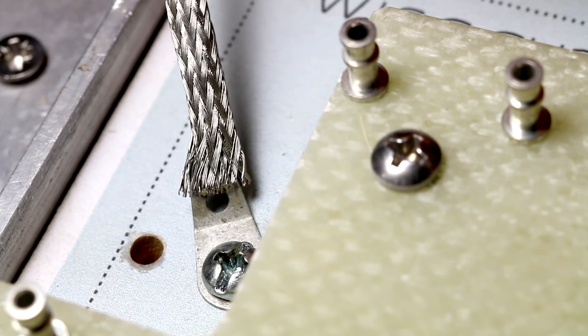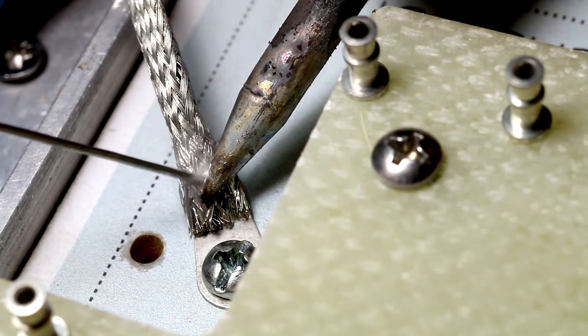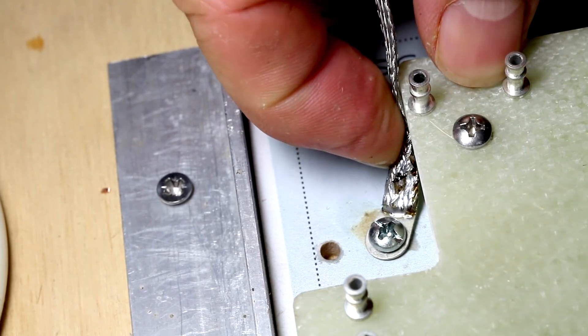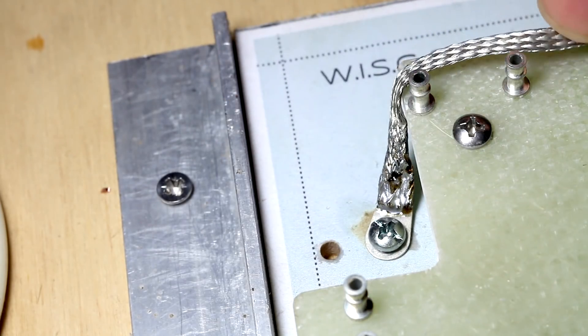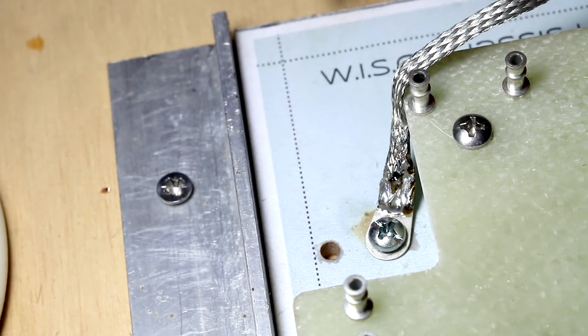Then slip that over our ground lug and just melt some solder into it. It's going to come in pretty tight on the board because we're going to have our lamp that runs just here.